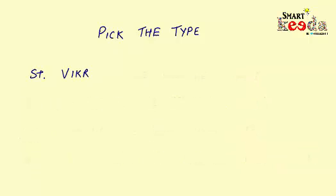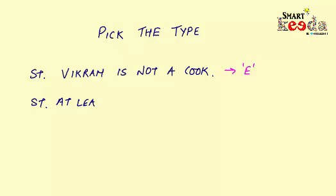Now let's have some more examples. The next statement is: 'Vikram is not a cook.' Here you can see that the sentence is starting with the name of a particular person and has a negative word 'not' in it, and therefore it will be an E type statement, as it forms a universal negative kind of statement.